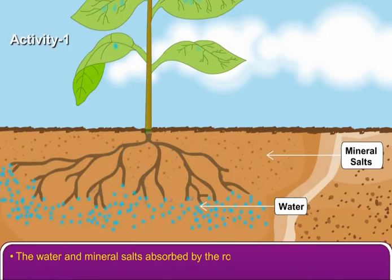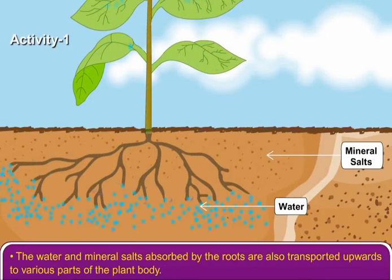The water and mineral salts absorbed by the roots are also transported upwards to various parts of the plant body. This is called conduction. Let us perform one more activity.